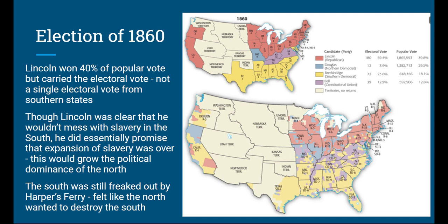It's worthwhile noting that even if you added up all the electoral votes and the Democratic Party had not been split among three groups, Lincoln still would have won the election. Although perhaps a unified Democratic Party might have appealed to some southern or western states. Also note that the large territories shown on the map were not yet states, so they did not get to vote in the election.